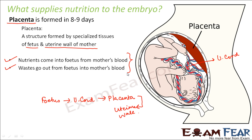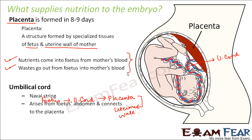The umbilical cord is also called the navel string. You would have seen that from the navel of the baby a string develops — that is why when a baby is born, the doctor cuts the string. As a result, the navel portion of the baby has a different structure that falls off on its own after a few days. The umbilical cord arises from the fetus's abdomen and connects to the placenta.